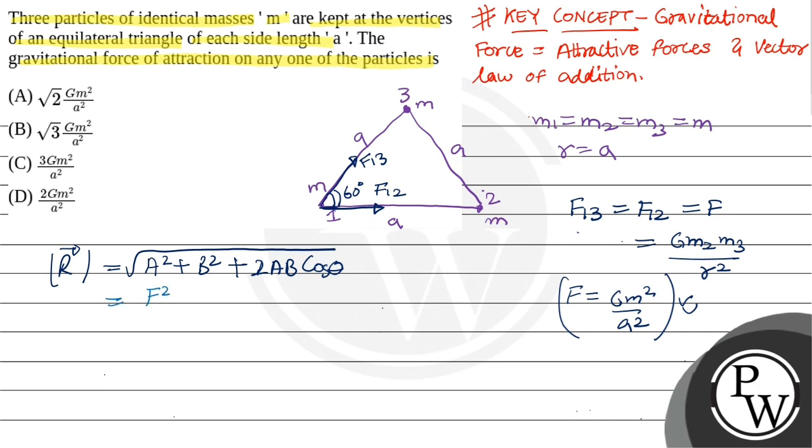So when we solve it, we have F square which is F13 force on 1 due to 3, and the other F square which is F12 force on 1 due to 2, plus 2F square cos 60 under root. When we solve it, we have 2F square plus 2F square into 1 by 2, cos 60 degree value 1 by 2.